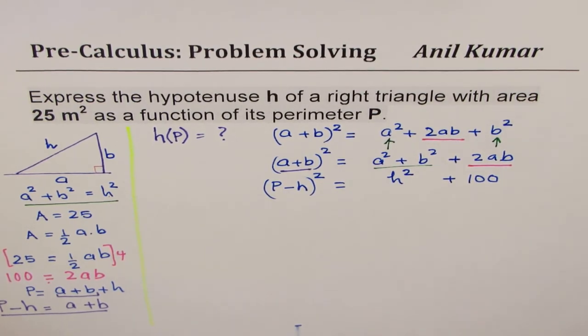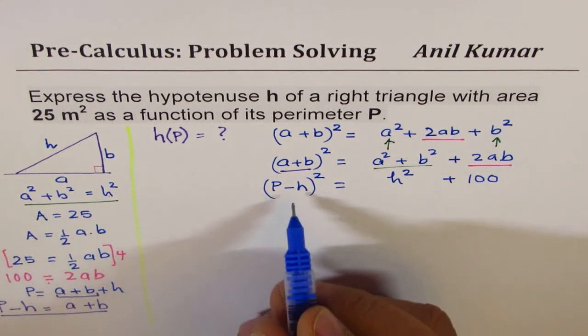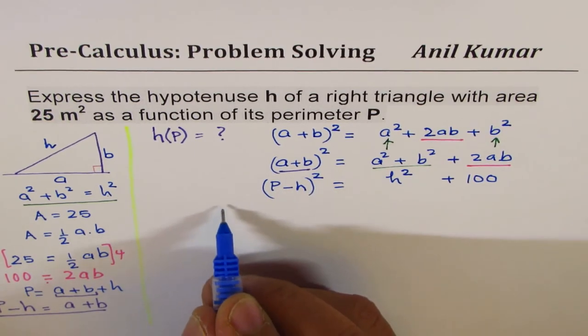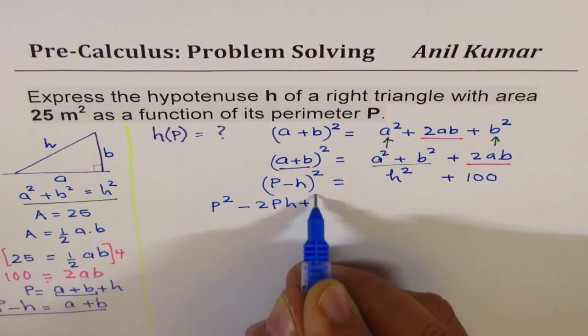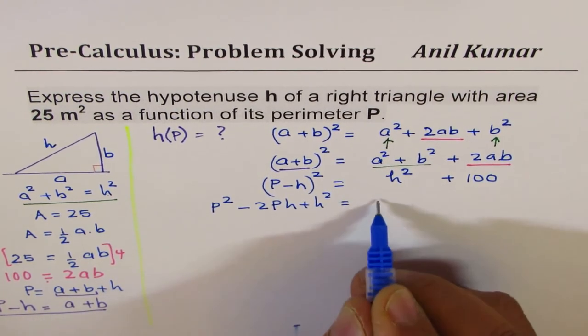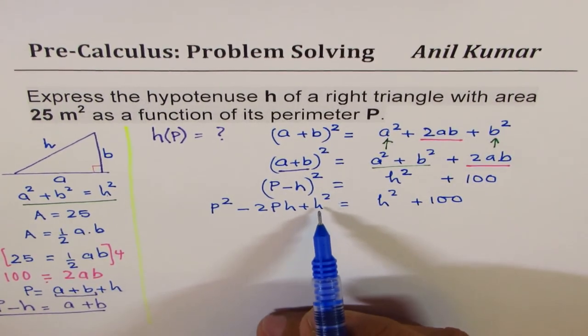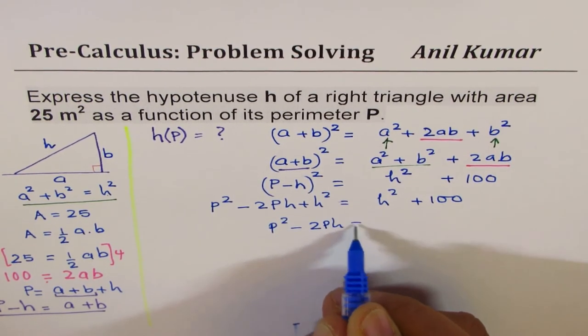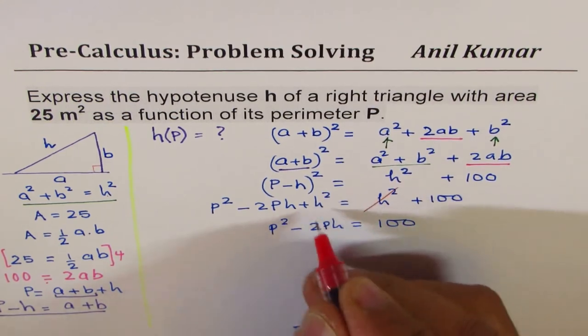Now how to go about? Well, a simple way is, let us just expand the left side. p minus h whole square could be written as p square minus 2ph plus h square. On the right side, we have h square plus 100. Do you see that? Now h square and h square cancel. So we have p square minus 2ph equals to 100. Both these h square cancel. We can cancel them.